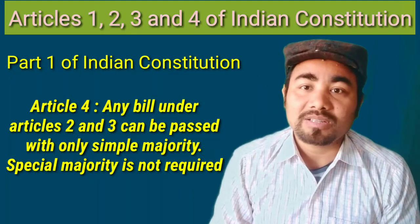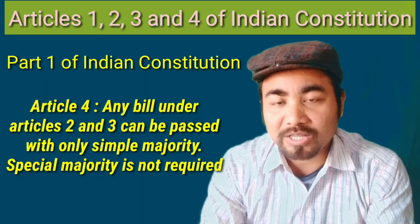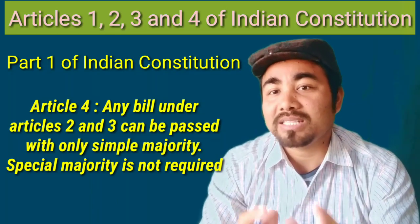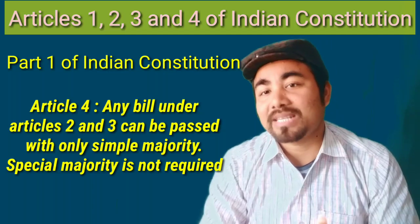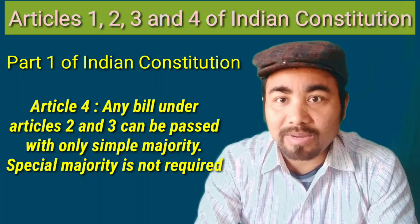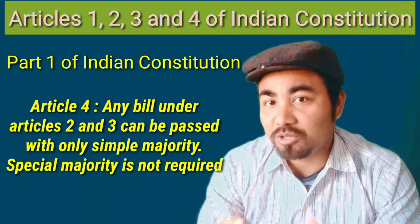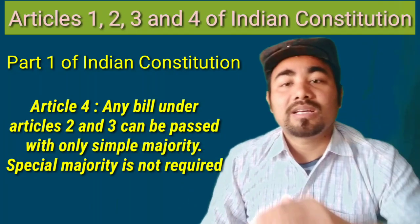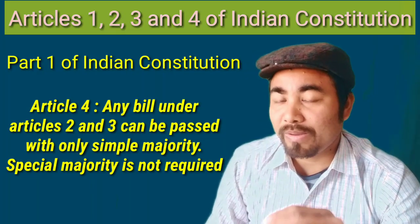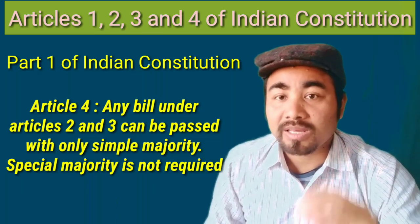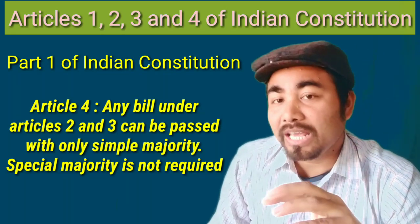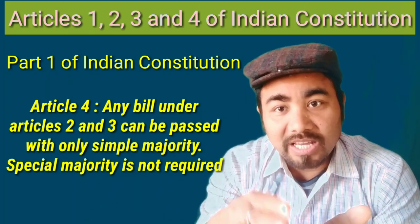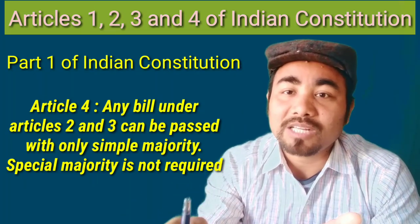If you look at the special majority, there are 545 MPs total in Parliament, and with the Rajya Sabha there are 601 members. The special majority requires more than 50% of the total membership and two-thirds of members present and voting. The 50% of the total MP count must support the bill.